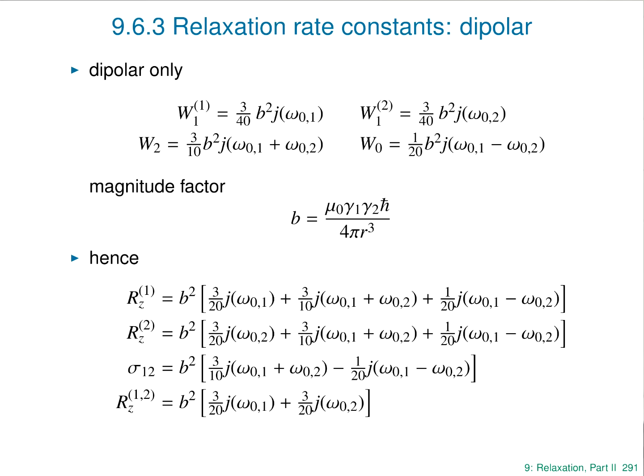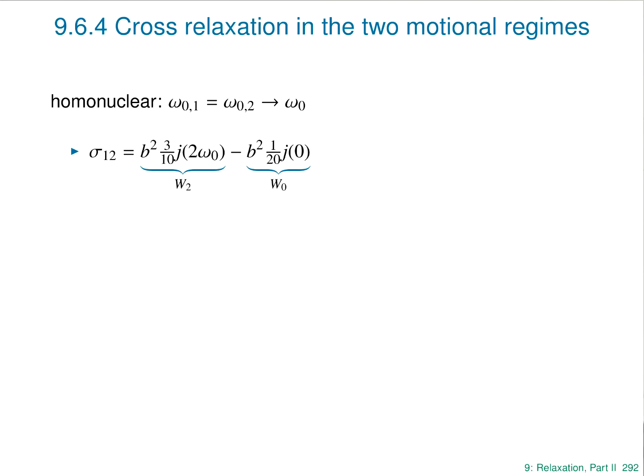This cross-relaxation term sigma-1,2 is particularly interesting because it gives rise to the nuclear Overhauser effect. It's useful to think about it in a homonuclear system — two protons — where omega0,1 and omega0,2 are the same. The expression for sigma-1,2 then has a term depending on spectral density at twice the Larmor frequency (from the W2 process) and a term depending on spectral density at zero frequency (from W0, which was originally the difference of the two Larmor frequencies, now zero).